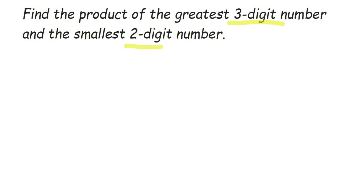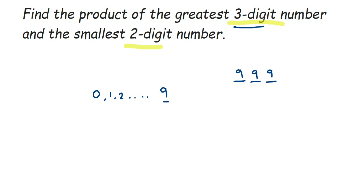From zero to nine, nine is the greatest digit. Now, the greatest three-digit number means a number with three digits. Since we want the greatest number, all three digits will be nine, so it will be 999 — that is the greatest three-digit number.